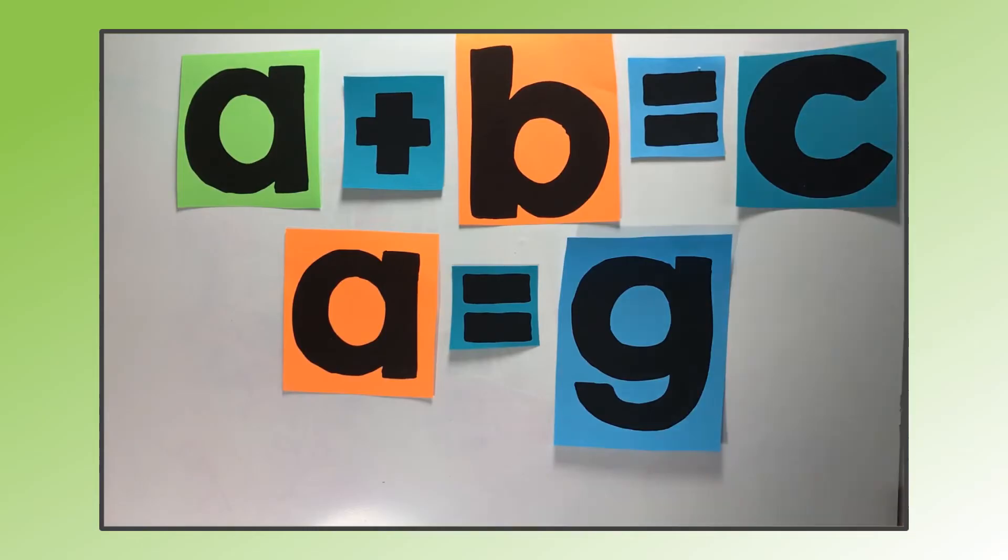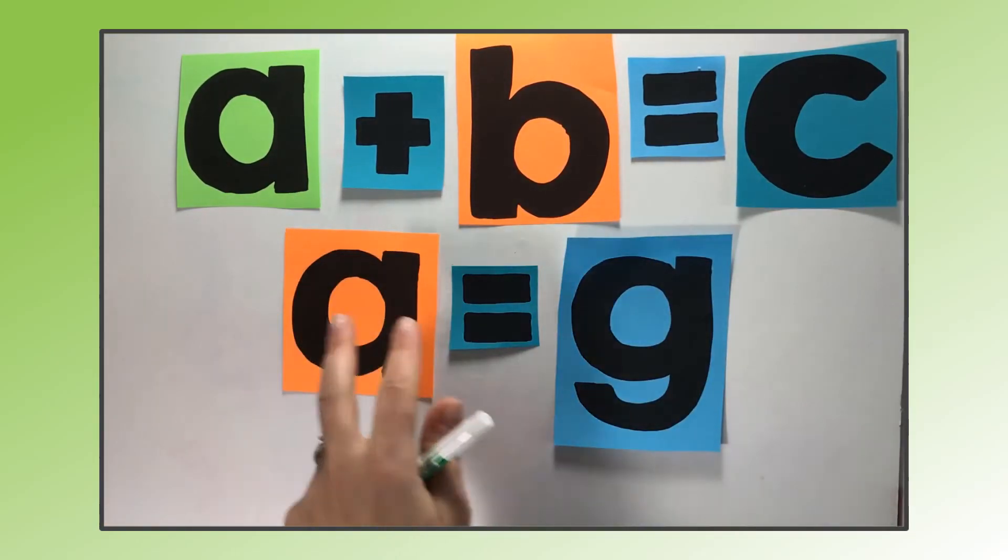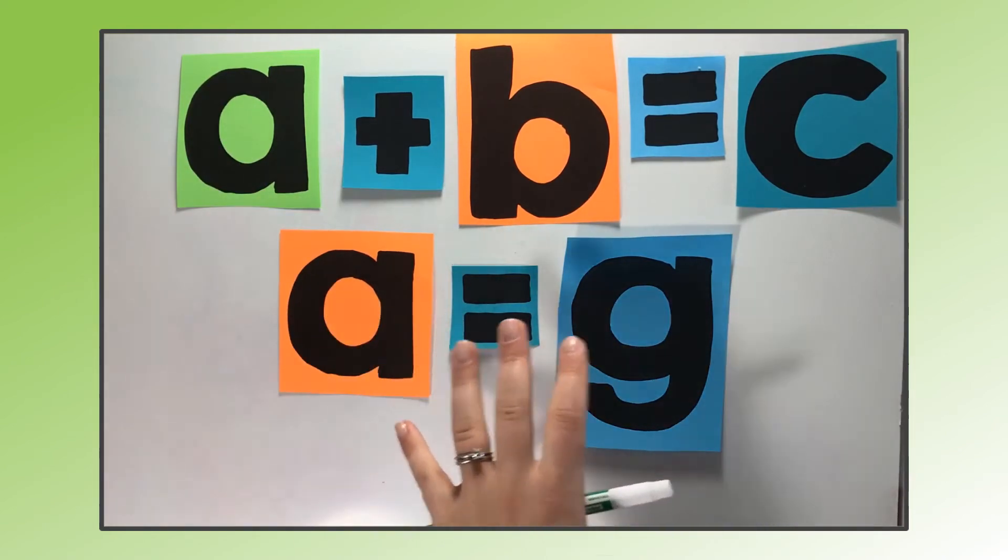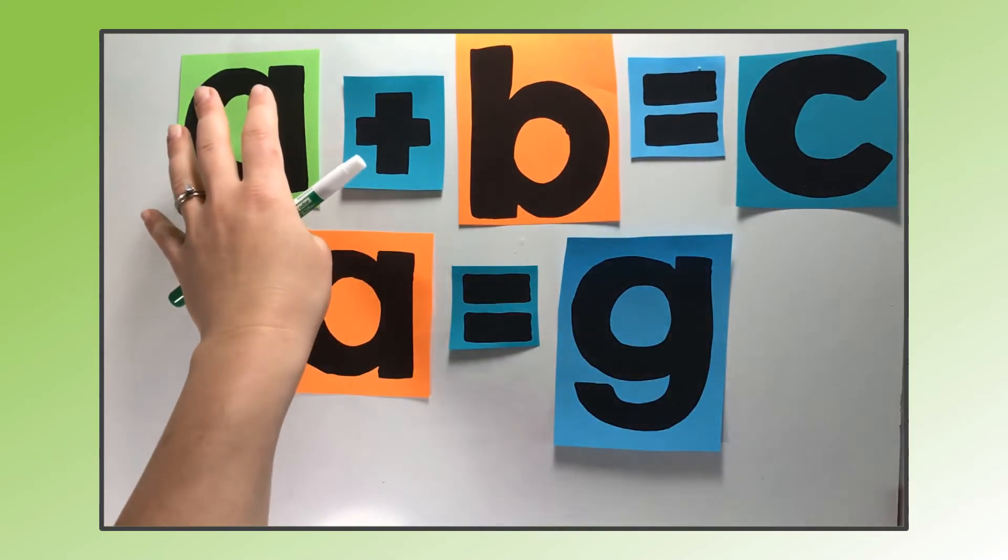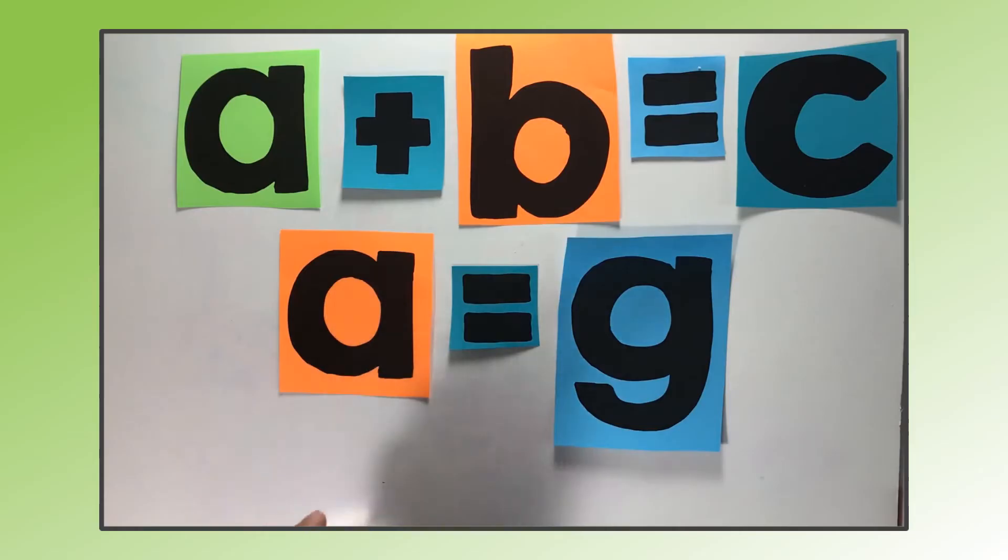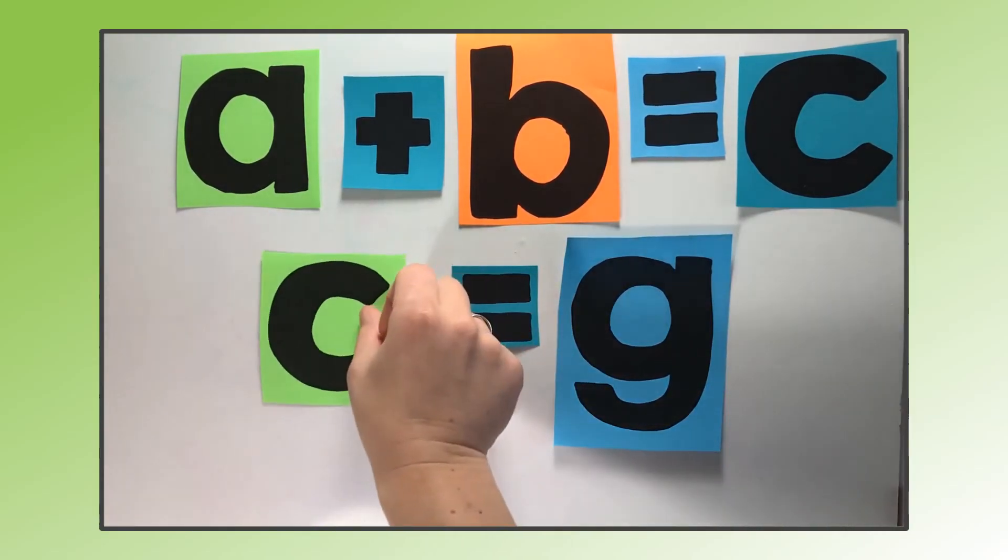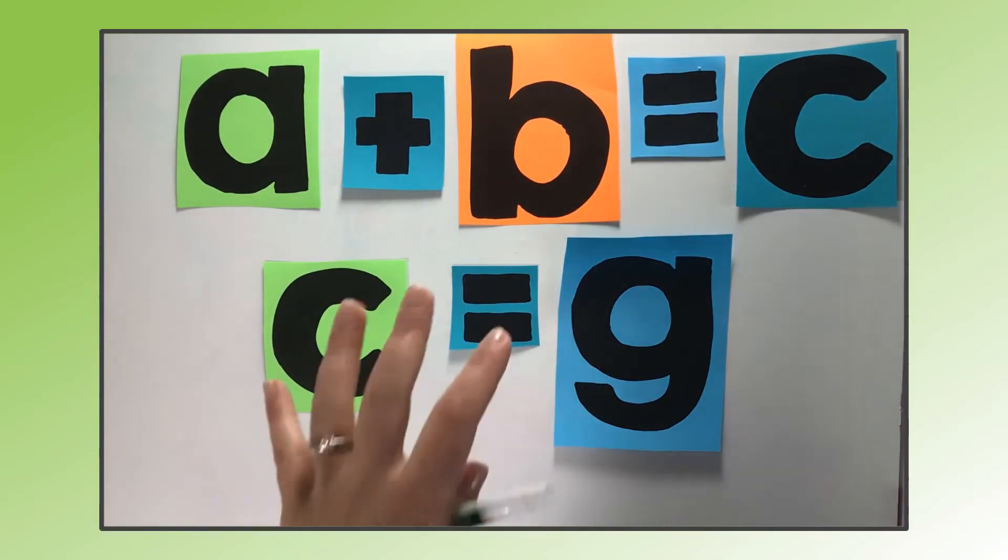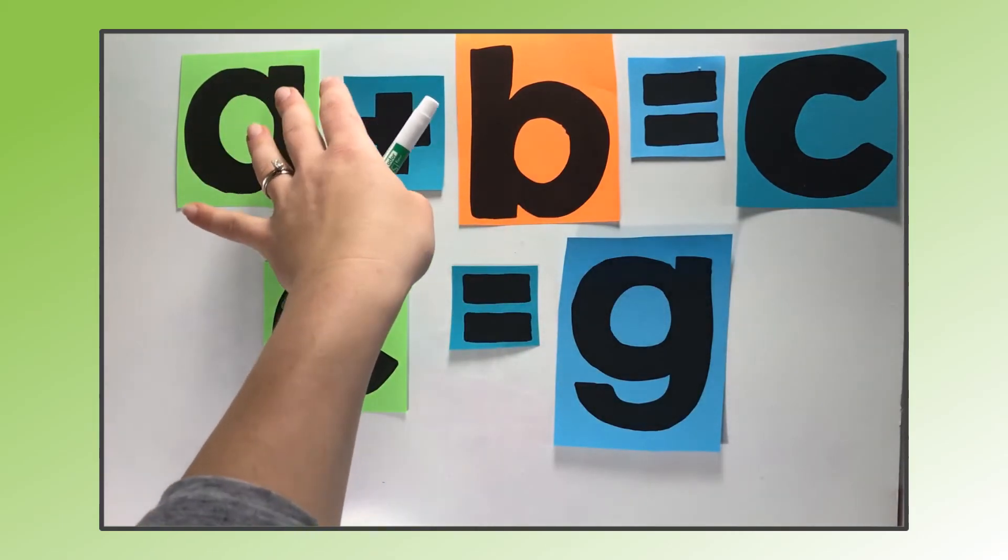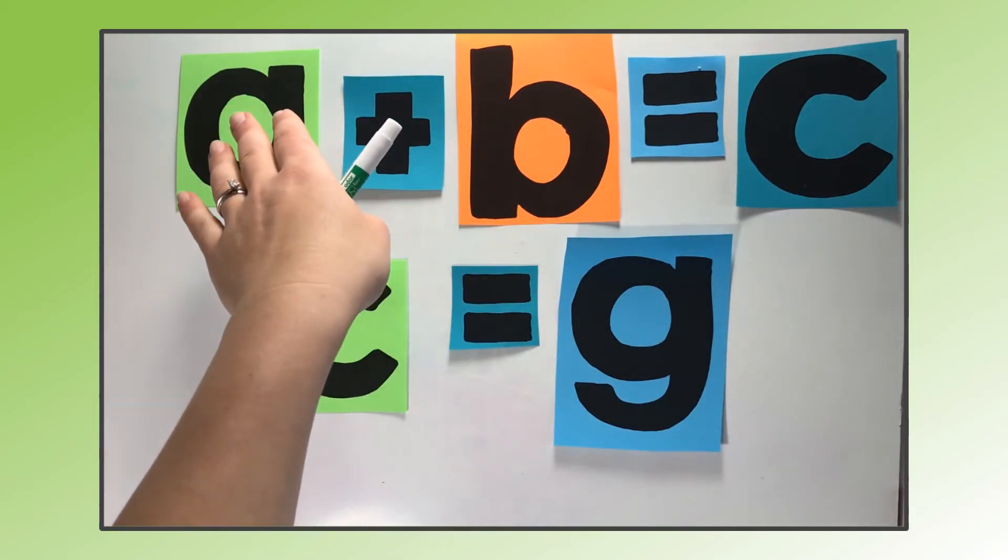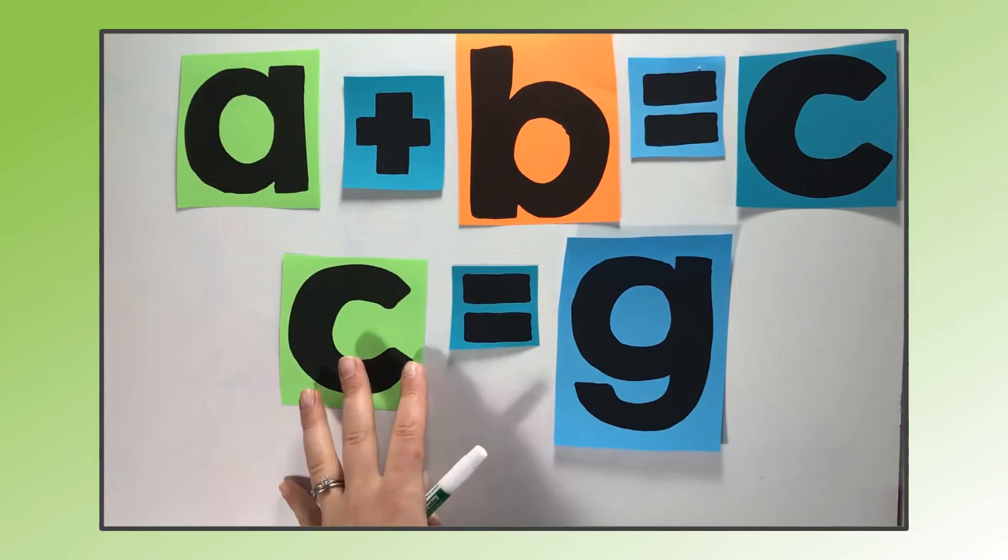Back to the original example that we had: a plus b equals c, and a equals g. So before we used substitution. Since a and g are equal, we can replace a with g. But now what if instead of that, we had this example? Now a was not an entire side of equation up here, so we could only use substitution. But what if it looked like this?